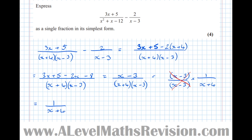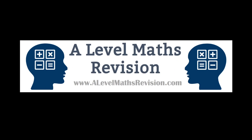Hopefully you've found that useful. If you take anything away from this tutorial, make sure it's that idea of cancelling as reordering of a fraction — reordering the order in which you multiply things — to make obvious a hidden factor of 1. For more videos like this, subscribe to our YouTube channel, and to find out more about our Skype tuition and revision courses, go to alevelmathrevision.com.